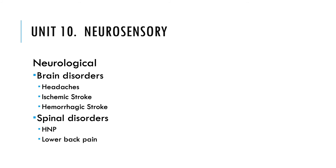Neurosensory: focusing on brain disorders, spinal disorders, and pain. For brain disorders, we're looking at headaches — you've got to know the three different kinds: cluster, migraine, and the third type. Know what causes them, how you treat them, and how you prevent them. There's a good table in the headache section covering preventative medication, treatment medication, and symptomology to help diagnose what kind of headache the patient is having.